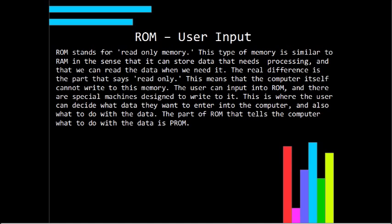This kind of memory is similar to RAM in the sense that it can store data that needs processing and that we can read the data when we need it. The only difference is that the part that says read-only doesn't mean we can't write to the memory — it means the computer itself can't write to the memory. The user can input into ROM, the user can write to the memory. If the user wants to add 5 and 3, he can enter 5 and enter 3. But the only difference between ROM and RAM is that the computer can't store it there for him. This is basically where the user says, 'I want to enter this number and this number and this is what I want to do with it.' He's going to enter an instruction and some data. So that's the part of the computer that's going to tell the computer what to do — the part of the ROM — and it's called Program ROM, or PROM. It's basically the instruction part of ROM.